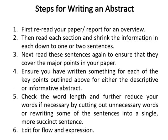Steps for writing an abstract: Step one — read your paper or report for an overview. Step two — read each section and shrink the information in each down to one or two sentences. Step three — read these sentences again to ensure that they cover the major points in your paper. Step four — ensure you have written something for each of the key points outlined above for either the descriptive or informative abstract. Step five — check the word length and further reduce your words if necessary by cutting out unnecessary words or rewriting some sentences into a single, more succinct sentence. Step six — edit for flow and expression.